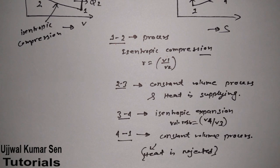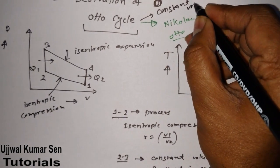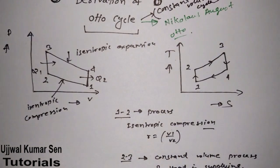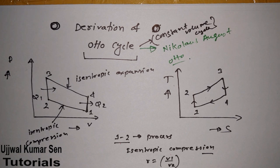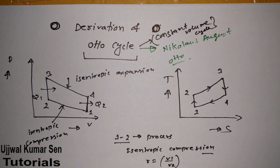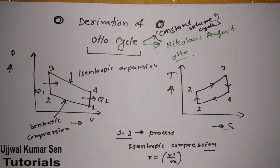These are all four processes, and with these four processes this Otto cycle operates. Another name for the Otto cycle is the constant volume cycle. So if you get a question in an examination asking you to derive the equation or efficiency for the constant volume cycle, that is the same as the Otto cycle, because in this cycle there are two constant volume processes.